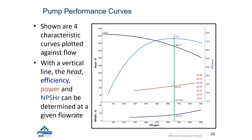In general, if you move to the left of a centrifugal pump curve you will see higher heads, lower horsepower, and generally lower NPSH requirements. The efficiency may get better or worse depending on whether you are to the left or right of the best efficiency point.